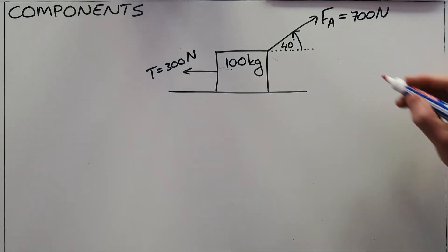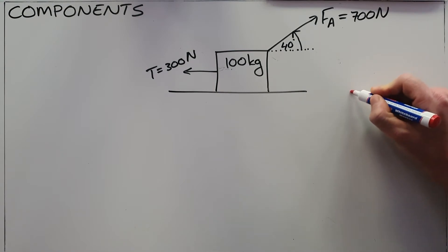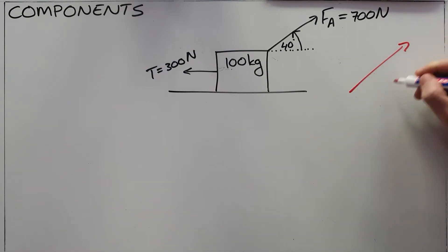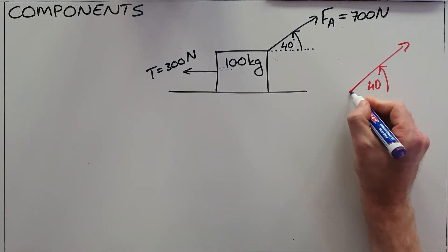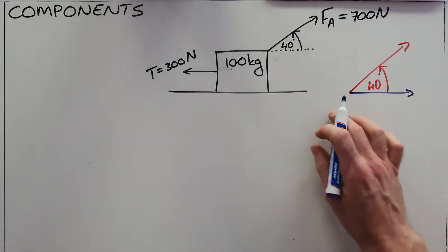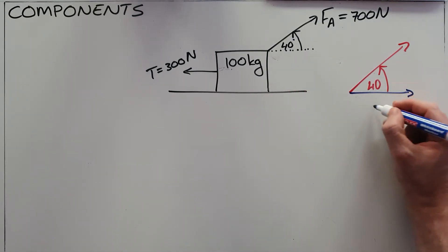The way that we do that is we can redraw this applied force over here, and we can show that this applied force has two components, meaning two forces that make it up. Those two forces are the part of that applied force that is pulling it parallel to the surface, and we can call that F_A parallel.